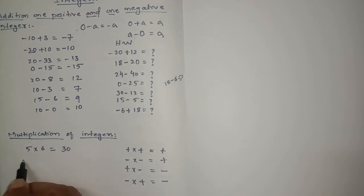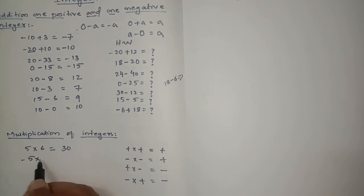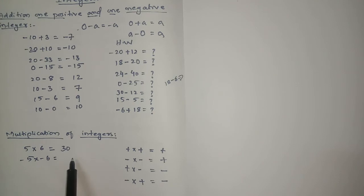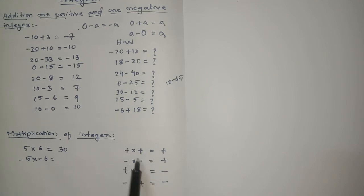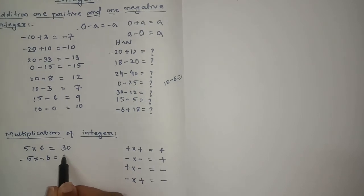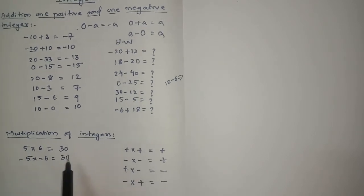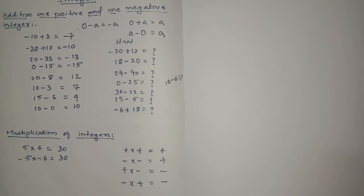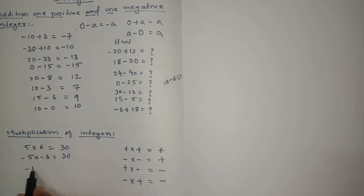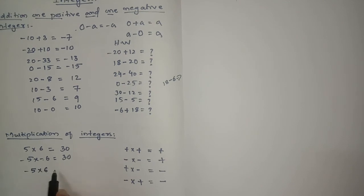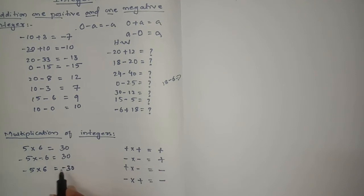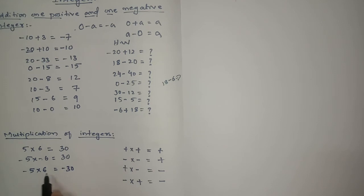Suppose it is minus 5 into minus 6. Minus into minus is plus, because multiplication of the same sign is plus. So the answer is plus 30. Now if it is minus 5 into plus 6, then the result will be minus 30, because minus into plus is minus.